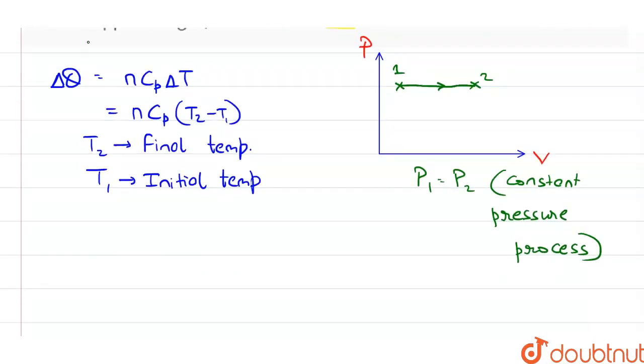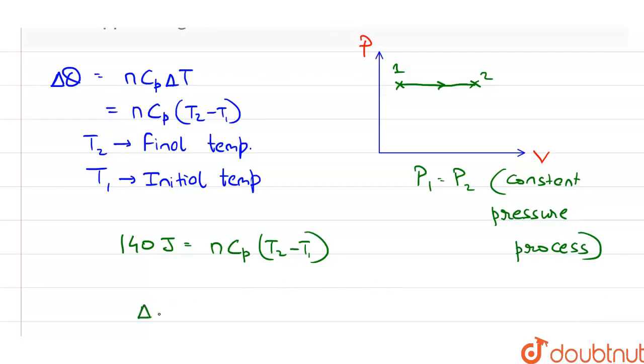Now delta Q is given to us as 140 joules, equal to N Cp times T2 minus T1. And we need to find delta U and delta W.